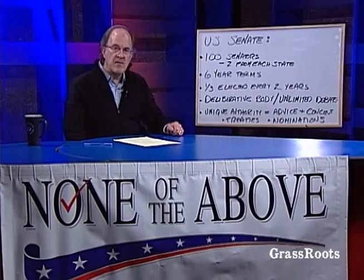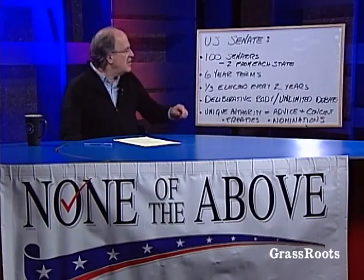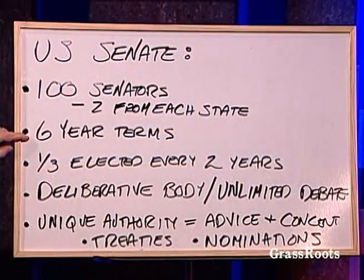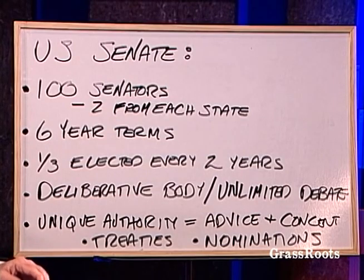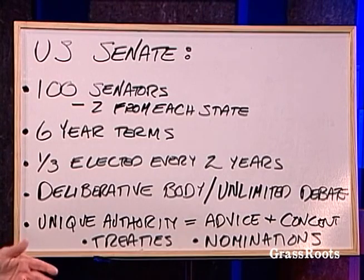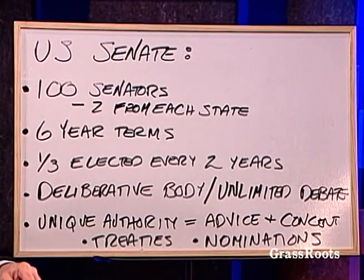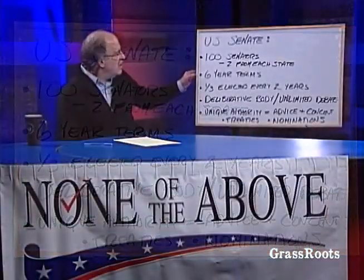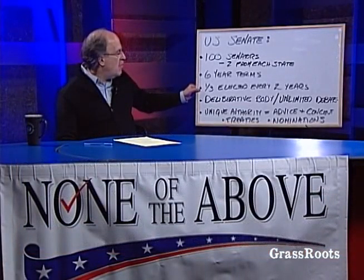Another compromise that makes the Senate fairly unique is that each senator has a six-year term. In the House of Representatives the terms are two-year terms, but here the terms are six years, broken up so that in each election cycle one-third of the Senate is elected — basically two years, two years, two years, and by the time you get through six years you have a full Senate having been re-elected. Six-year terms and one-third elected every two years.